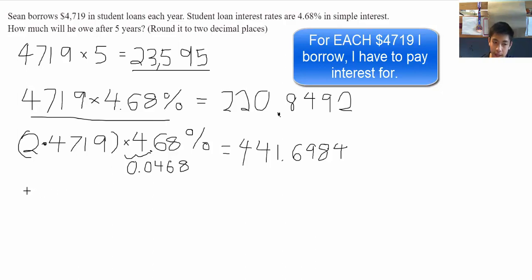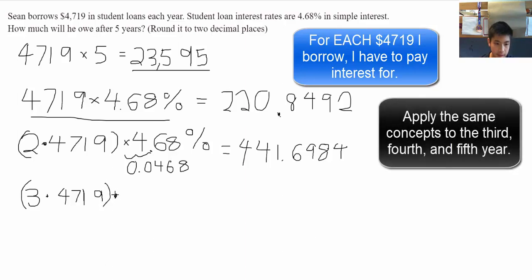Now, we do it for the third year. In the third year, we will be paying the interest for three times $4,719, because we will be borrowing three times $4,719 in the third year. And we multiply that by the same rate. I'm going to write 0.0468 to make it easier to understand here. And that will equal to $662.5476.